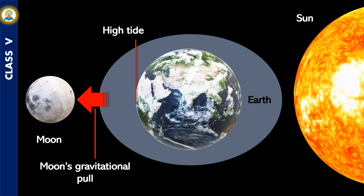Another high tide occurs on the opposite side of the Earth because of its rotation. The water of the region in between the two high tides falls and forms a low tide. The intensity of the tides varies with the phases of the Moon.